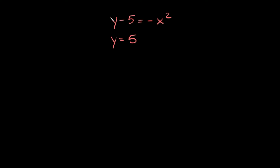Here's the next one. We have y minus 5 equals negative x squared, and y equals 5. The second equation is basically telling us exactly what y is equal to — it's 5. So we can just plug in 5 for y, giving us 5 minus 5 equals negative x squared, and 5 minus 5 is 0, so 0 equals negative x squared.